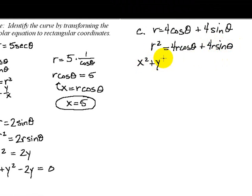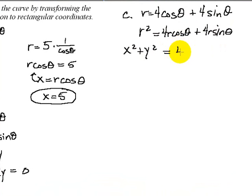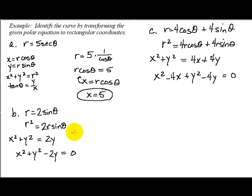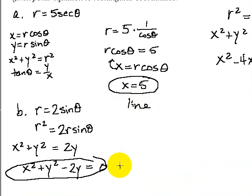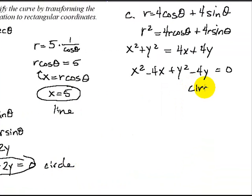So we get X² plus Y² equals 4X plus 4Y, which means X² minus 4X plus Y² minus 4Y equals 0, which again is a circle. So here we had a line, here we have a circle, here we have another circle.